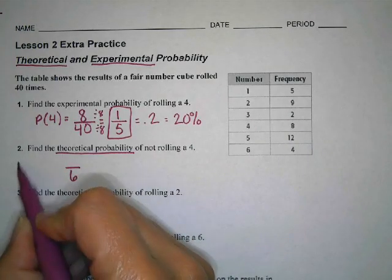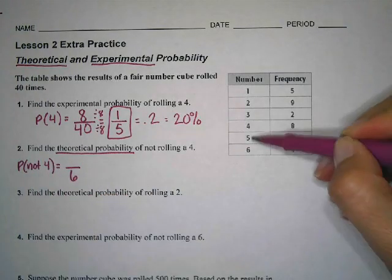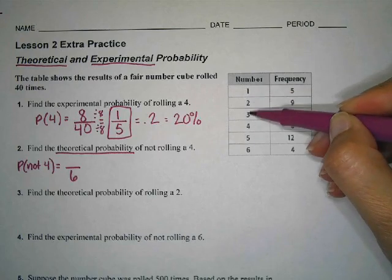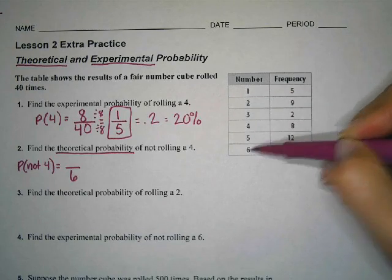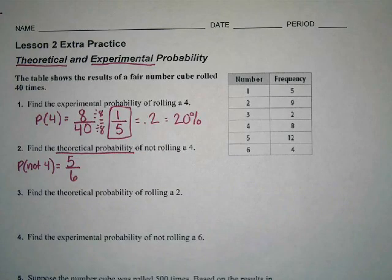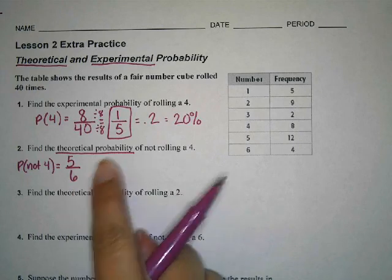We want the probability of not rolling a 4. By not rolling a 4, we could roll a 1, 2, 3, 5, or 6. That's 5 different choices out of 6 that we could roll and not be a 4. So that's my theoretical.